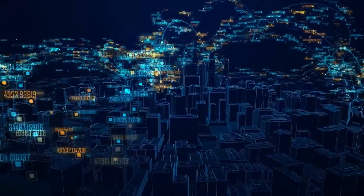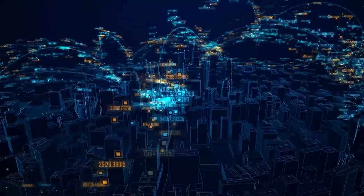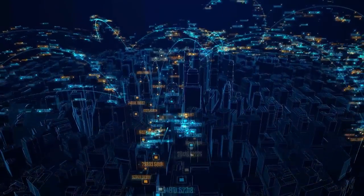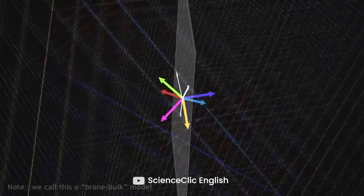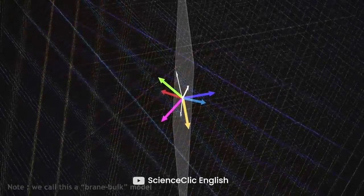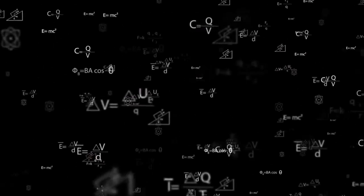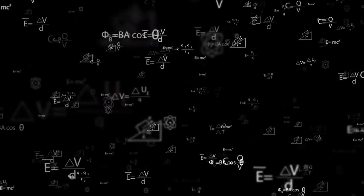But while things that we see can move left or right, up or down, and back or forth, strings can move in at least 10 different ways, and be either open or closed. And some physicists think that the way strings move determines the attributes of all the things in the universe.